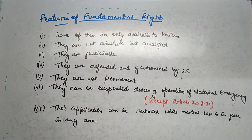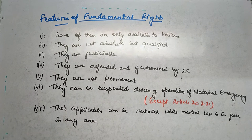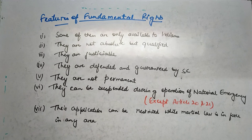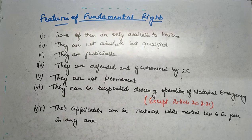For example, they can be suspended during the operation of a national emergency. The state can impose restrictions such that fundamental rights are suspended during a national emergency — except Article 20 and Article 21, all other articles can be suspended during the operation of a national emergency. So this is the kind of restriction showing they are not absolute but qualified.